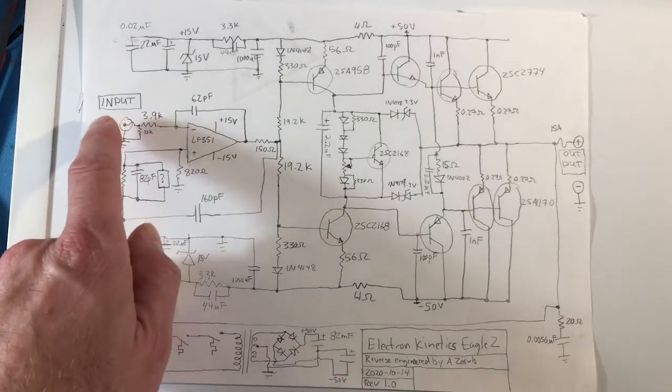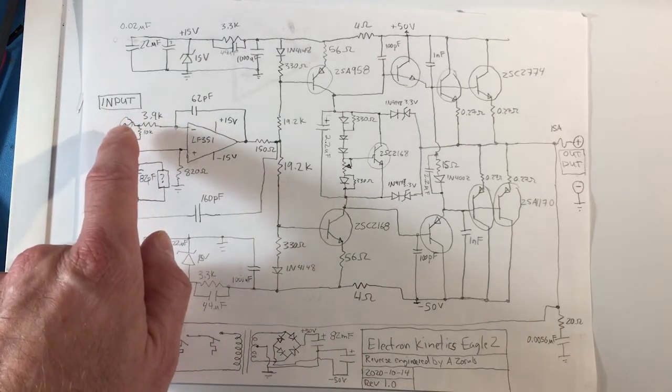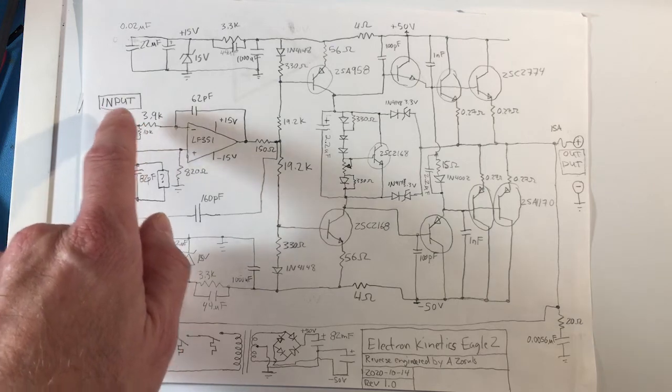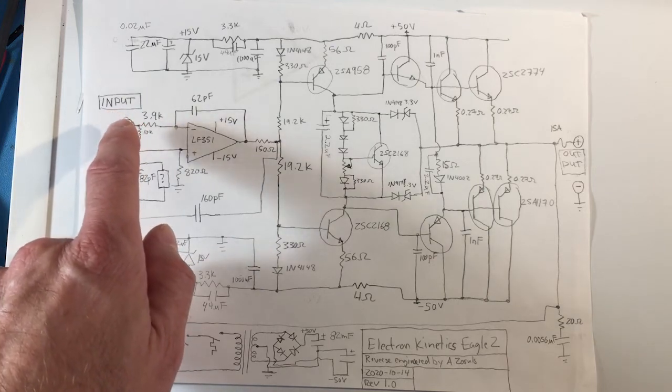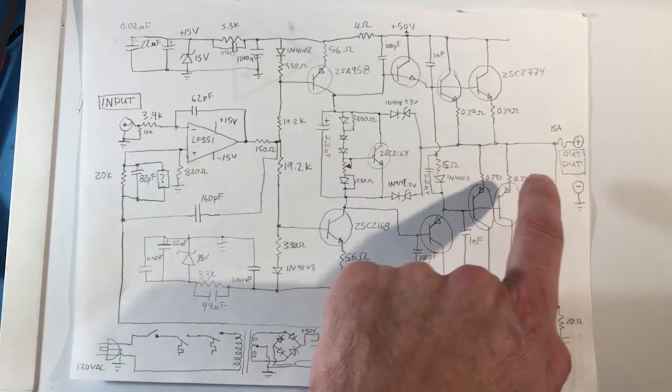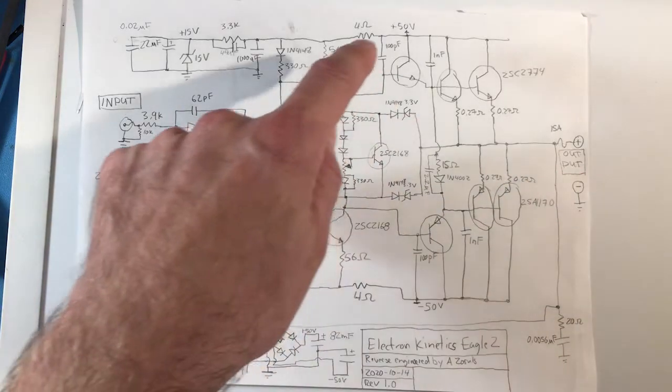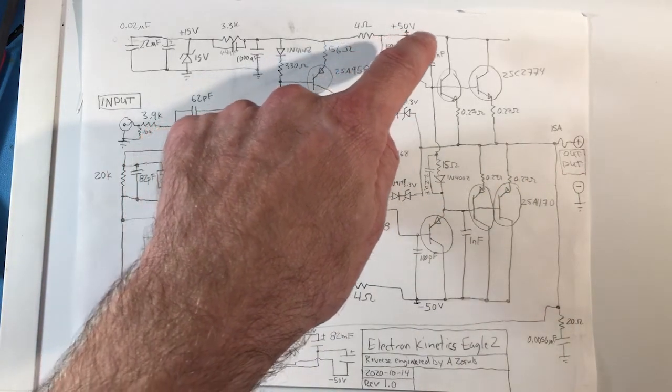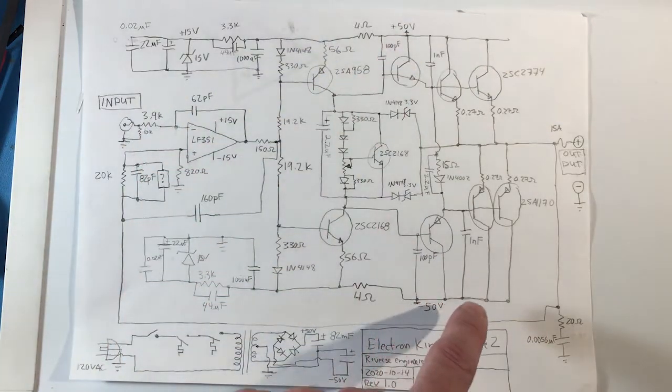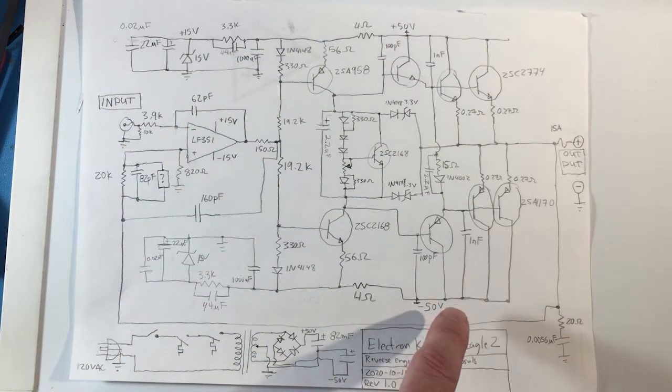So to orient you the signal input is right here. That's where you plug in, say, your pre-amplifier or your music system to your amplifier. And then the output is over here on the right. Then there's a 50 volt power supply that's connected along this rail and a minus 50 volt power supply connected along this rail.